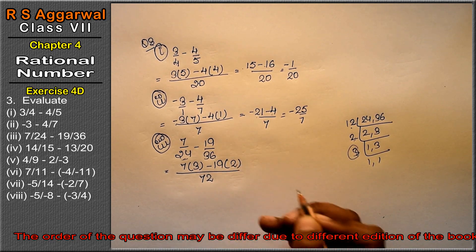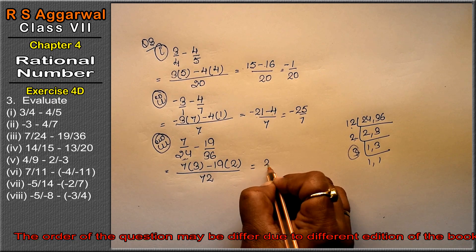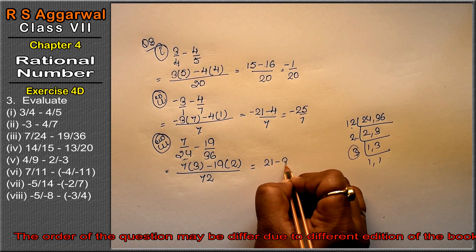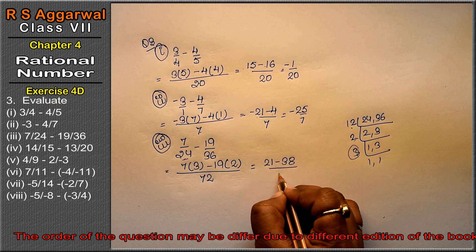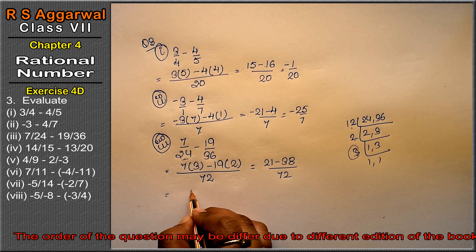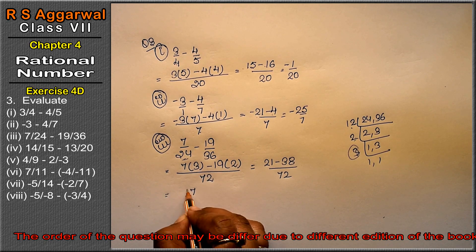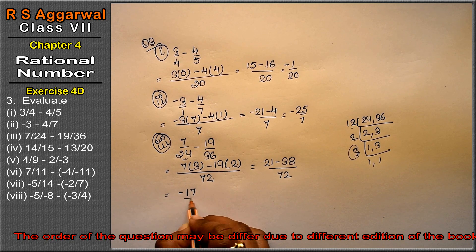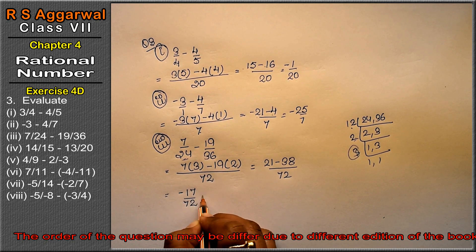So we have 21 minus negative 38 upon 72. Opposite signs are subtracted. 38 from 21 gives us 17, and the sign of the greater number is negative, so minus 17 upon 72 is the answer.